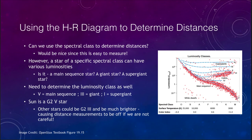What we want to look at first is whether we can use the spectral class — O, B, A, F, G, K, or M — to determine distances. This would be a great thing since it is very easy to measure the spectral class. All we need to do is have a star that is bright enough to get a spectrum and to classify it.